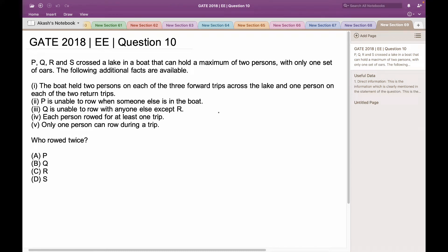P, Q, R and S cross the lake in a boat that can hold a maximum of two persons with only one set of oars. The following additional facts are available.